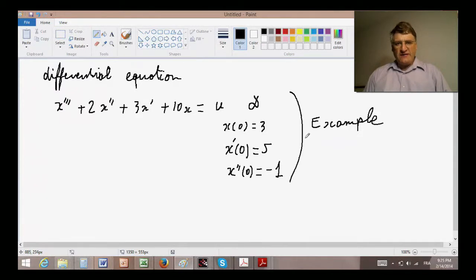And we have some initial conditions like x of 0 is equal to, let's say, 3, x prime of 0 is equal to 5, then x second of 0 is equal to minus 1. There are two ways to deal with this problem.